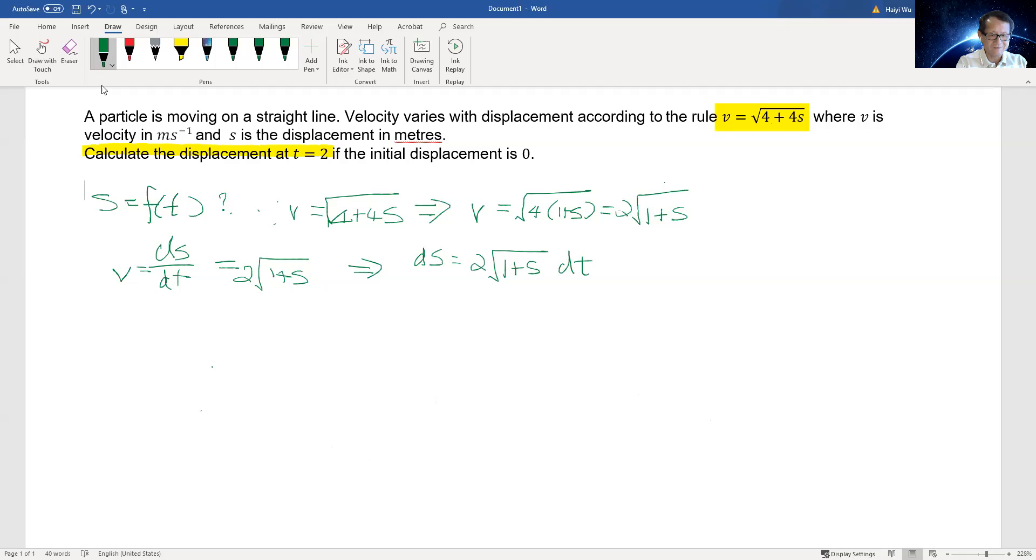We need to establish the relationship between s and t. But if you look at this, this thing is on the right hand side, so we need to move that to the other side. We put ds divided by 2√(1 + s) equal to dt. Now we can see t will be the integration of 1 divided by 2√(1 + s) ds.